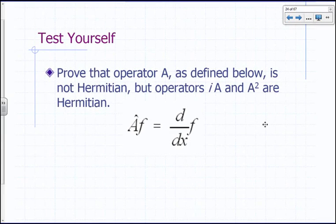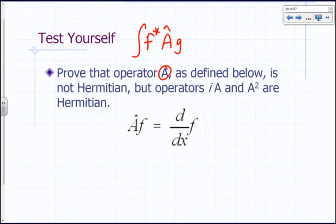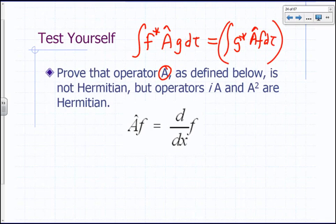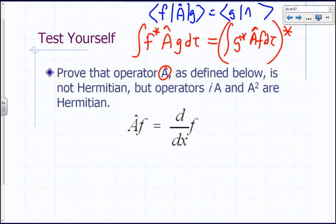Last time we started talking about Hermitian operators. The definition: operator A is Hermitian if the integral of f-star A-hat g d-tau, where f and g are arbitrary functions and integration is over all space, equals the integral with f and g switched — g-star A-hat f d-tau — with a complex conjugate taken after the switch. In bracket notation, this is: f|A-hat|g must equal (g|A-hat|f)*.